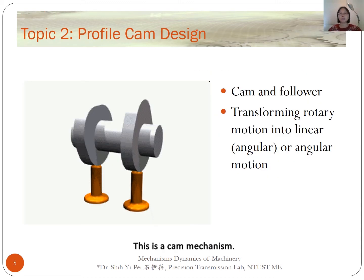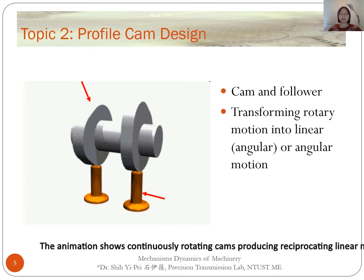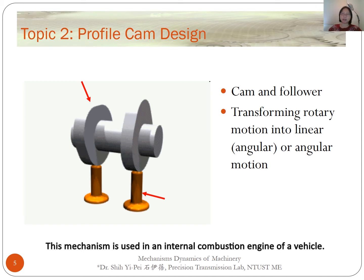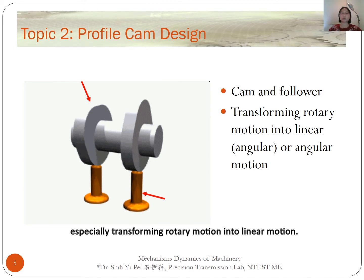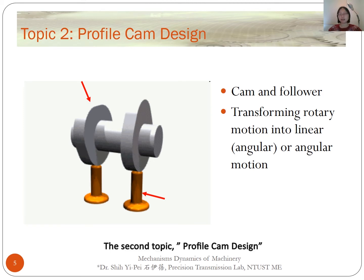This is a cam mechanism. These are the cam and the followers. The animation shows continuously rotating cams producing the reciprocating linear motion of the followers. This mechanism is used in the internal combustion engine of the vehicle. A cam is a rotating piece in the mechanism used especially for transforming rotary motion into linear motion.